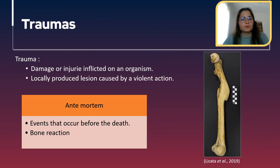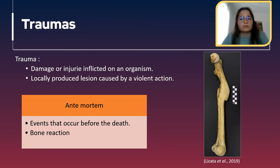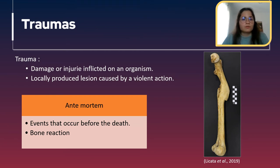Starting with traumas. These are commonly found on human remains. Trauma is a damage or injury inflicted on an organism that is locally produced and caused by a violent action. There are three concepts important when talking about traumas: antemortem, perimortem, and postmortem.